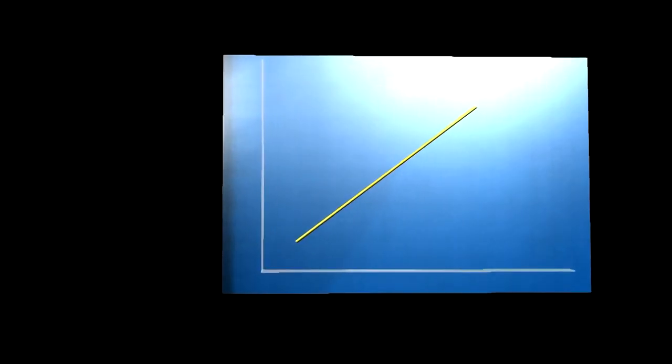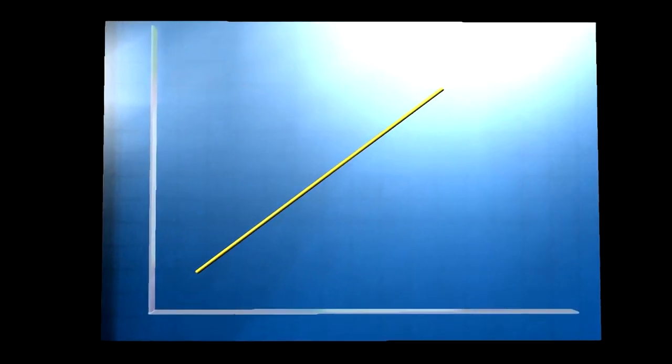So we have our supply curve here, and we're assuming that there are no externalities in production so that the supply curve represents both the marginal private costs and the marginal social costs.